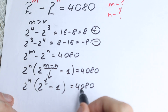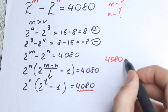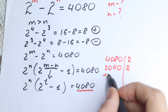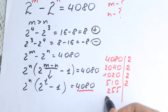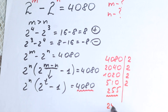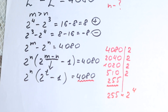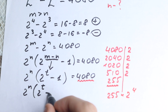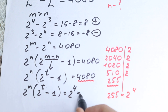Now, 4080 is an even number, so we can factor it easily. Let's divide 4080 by 2 to get 2040, divide again to get 1020, again to get 510, and again to get 255. So 255 is our odd number — our final factor. Therefore we can write 4080 as 2 to the power 4 times 255. So our equation becomes: 2 to the power n times (2 to the power t minus 1) equals 2 to the power 4 times 255.